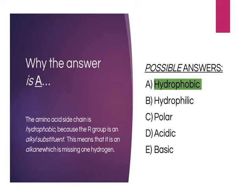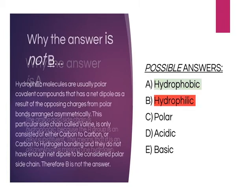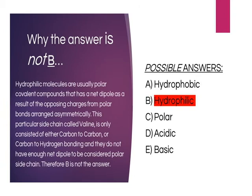The answer choice B states that the following amino acid side chain is hydrophilic, and that is not correct. Hydrophilic molecules are those that have an affinity to water and are usually charged or have polar side groups to attract water. But this particular side chain, known as valine, only has carbon-to-carbon or carbon-to-hydrogen bonding, and does not have enough electronegativity difference to be called a polar structure. Therefore, B is not the correct answer.